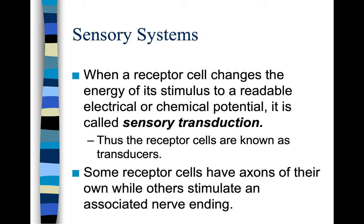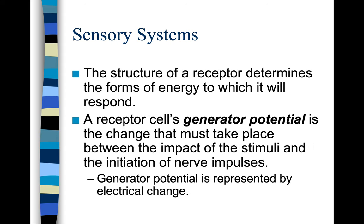Some receptor cells have axons of their own, while others stimulate an associated nerve ending. The structure of the receptor determines the forms of energy to which it will respond. A receptor cell's generator potential is the change that must take place between the impact of the stimuli and the initiation of nerve impulses. Generator potential is represented by electrical charge.